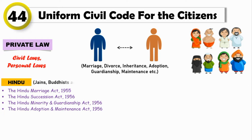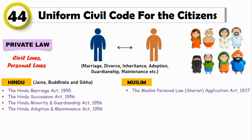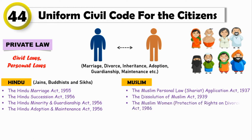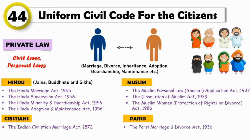These acts are also applicable to Jains, Buddhists, and Sikhs. Under Muslim Law: the Muslim Personal Law (Shariat) Application Act 1937, which deals with marriage, succession, inheritance, and charities among Muslims; the Dissolution of Muslim Marriage Act 1939, which deals with the circumstances in which Muslim women can obtain divorce; and the Muslim Women Protection of Rights on Divorce Act 1986, which deals with the rights of Muslim women. Christians are regulated by the Indian Christian Marriage Act 1872, and Parsis by the Parsi Marriage and Divorce Act 1936. Apart from these, there are a few central laws that don't follow any particular religion — for example, the Special Marriage Act 1954, under which inter-religion marriages can take place.